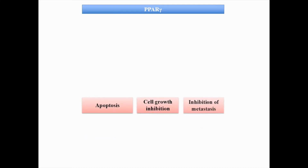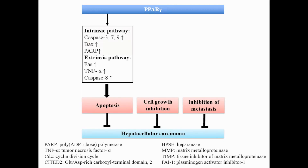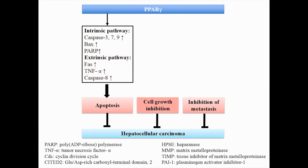More in vitro and in vivo evidence demonstrates that activation of PPAR gamma triggers apoptosis, inhibition of cell growth, and metastasis in hepatocellular carcinoma. Apoptosis is induced through intrinsic or extrinsic pathways. Cell growth inhibition is induced by increased levels of cell cycle progression-related proteins such as p21 and p27, or decreased levels of cell cycle progression-related proteins such as cyclin D1.